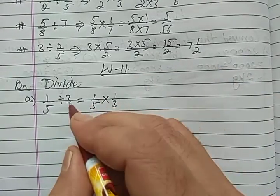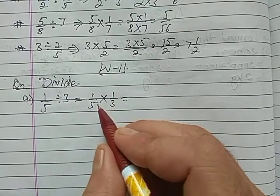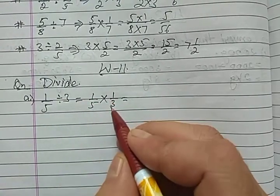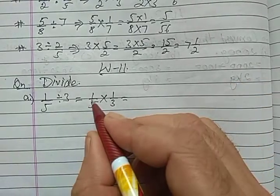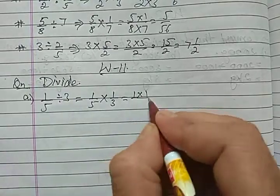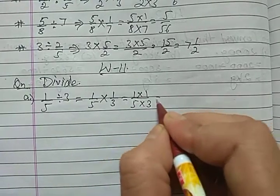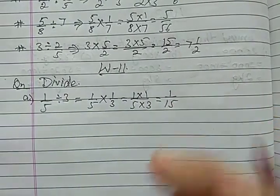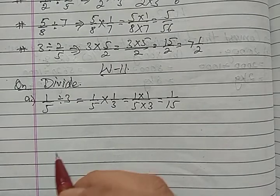You know how to divide a fractional number by a whole number. Convert the division sign into multiplication sign by writing the reciprocal of the divisor. So 1 upon 5 multiplied by 1 upon 3 — because 1 upon 3 is the reciprocal of 3. Multiply numerator with numerator: 1 × 1 = 1, and denominator with denominator: 5 × 3 = 15. Answer is 1 upon 15.